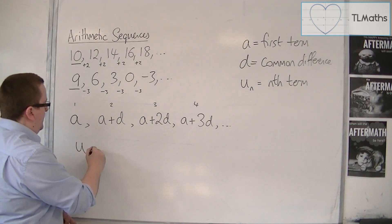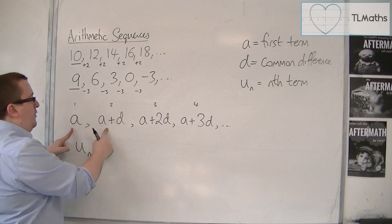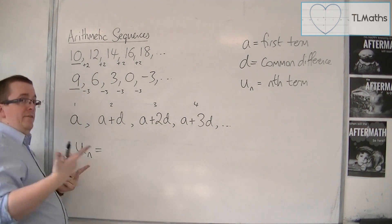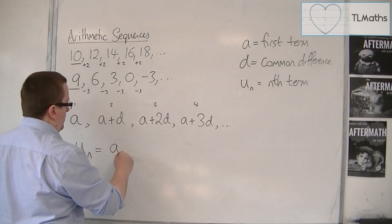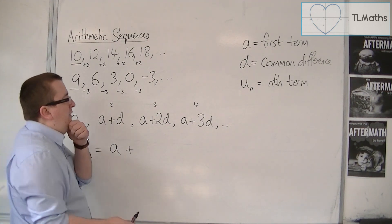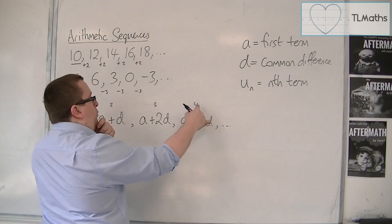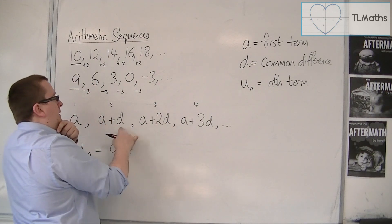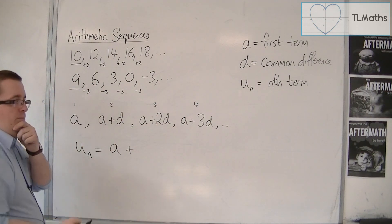So the nth term, well, we can see that for each of these terms, they all have this A. And what we can see is that the number in front of the D is always one less than my position.